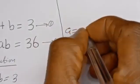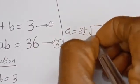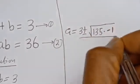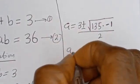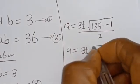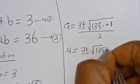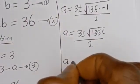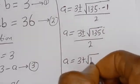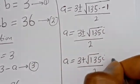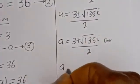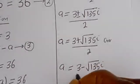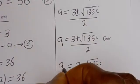Then a is equal to 3 plus or minus the square root of minus 135, which can be written as the square root of 135 times minus 1, over 2. So a is equal to 3 plus or minus the square root of 135 times i, over 2. Therefore, a1 is equal to (3 plus square root of 135i) over 2, or a2 is equal to (3 minus square root of 135i) over 2.